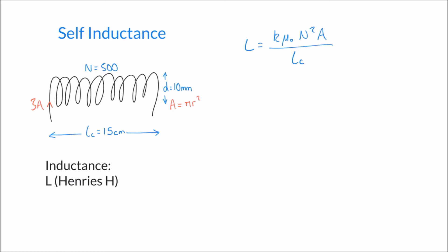If the inductor has no core — what we call an air core — then k stays as 1. If however we use a material as a core, for instance an iron core that runs through the centre of the coil, then k is no longer 1.